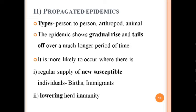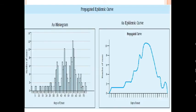COVID-19 was a novel virus, so there was no immunity beforehand. When herd immunity is low, the epidemic is likely to be more propagated and will tail off over a longer period of time. This is the typical curve of a propagated epidemic — it tails off over a much longer time compared to point source or continuous epidemics.